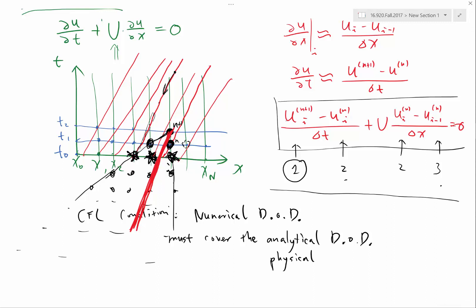So why does it make sense? It makes sense because in order for me to get the solution at a particular point, I need to know what happened along this line, right? If the numerical domain of dependence doesn't even include this line, then the numerical procedure doesn't even know what the solution should be. So how can it actually calculate the solution? The result is the scheme is going to be unstable. It doesn't even work.